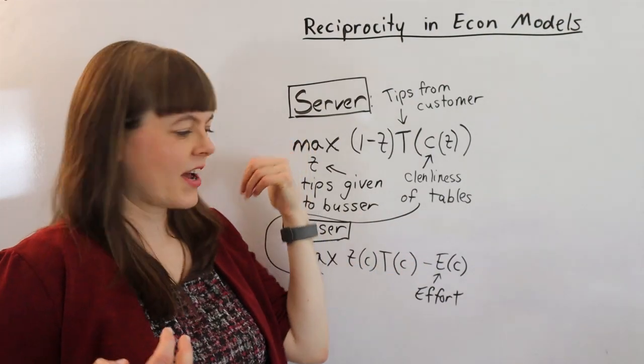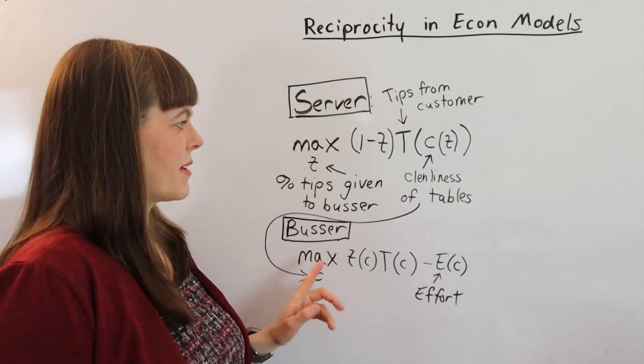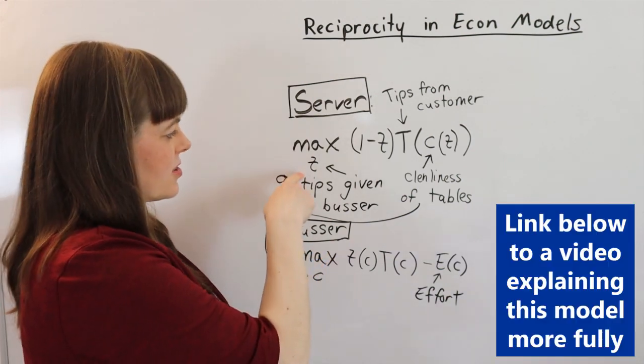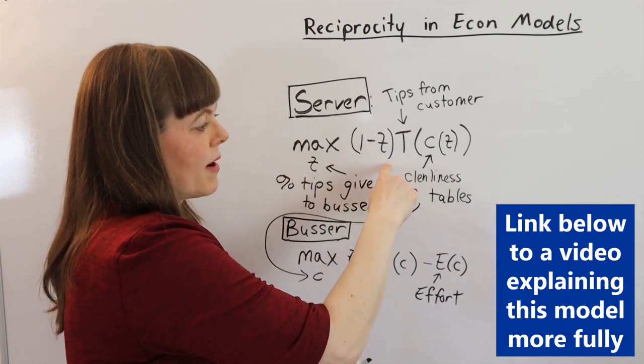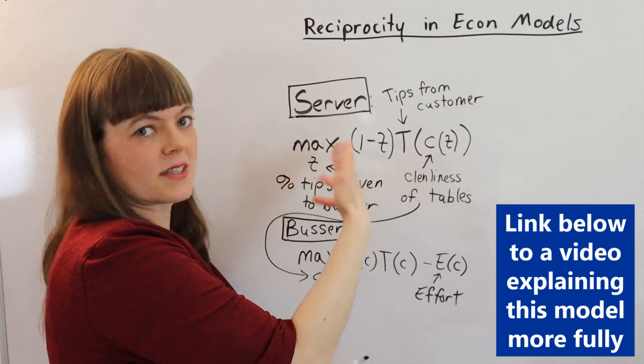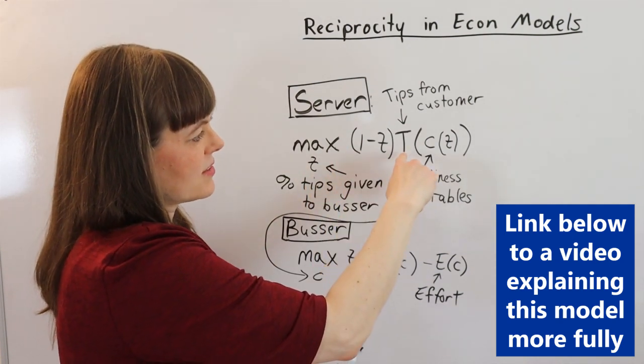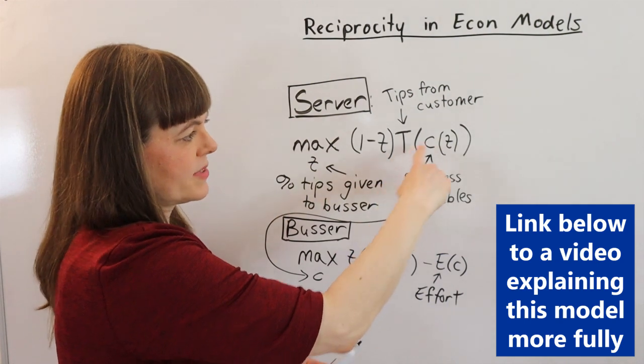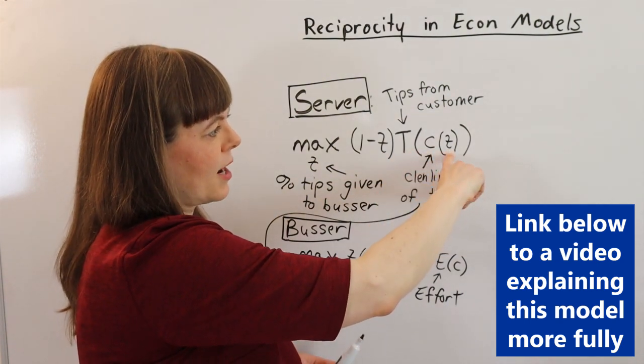So at the end of the night, the server has to decide what percentage of her tips is she going to give to the busser. The server is deciding the percentage of tips that go to the busser. She gets to keep 1-T percentage of tips, whatever's left over. Her total income is the tips times that, where the tips depend on how clean the table is.